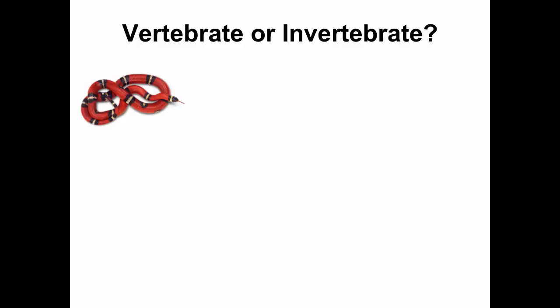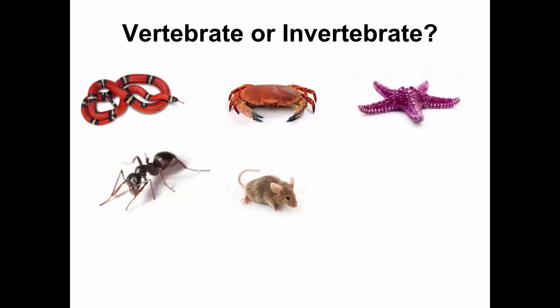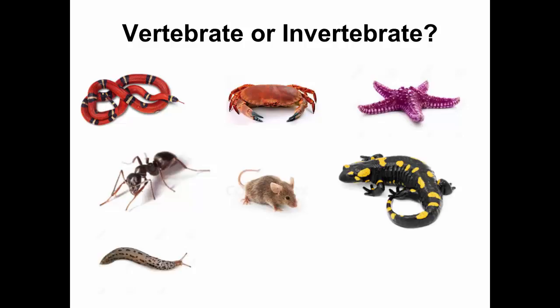This is the one people always make a mistake on — snakes. It's a vertebrate, it's a reptile. Snakes are vertebrates. A crab — invertebrate. Starfish — invertebrate. An ant — invertebrate. A mouse has a backbone, vertebrate. A slug — no, invertebrate.